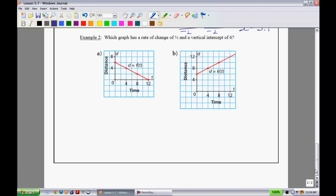Last example, Example 2 here. It says, which graph has a rate of change of 1/2 and a vertical intercept of 6? So let's go take a look. What I will do first is let's go and try and figure out the rate of change for each one. I've shown you a couple of ways to do rate of change, but I haven't shown you this one. This one's going to tie into next unit really well. You can also think of rate of change in terms of rise over run.